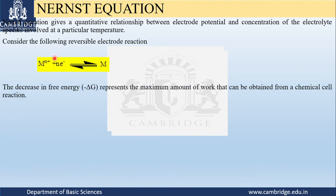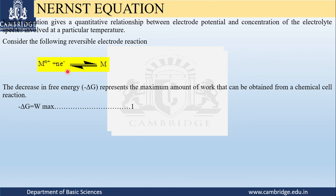To derive the Nernst equation, the free energy change in a redox reaction is written as: delta G equals W-max. Some work is done in the course of a reaction — it is nothing but the change in the number of electrons transferred. The work done in a redox reaction is done at the expense of the change in free energy, and the free energy decreases during the reaction. Delta G being negative means it is a spontaneous reaction.